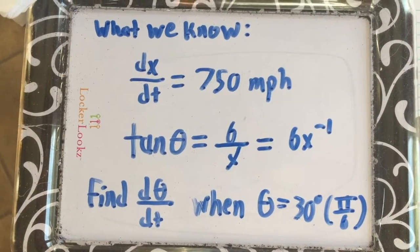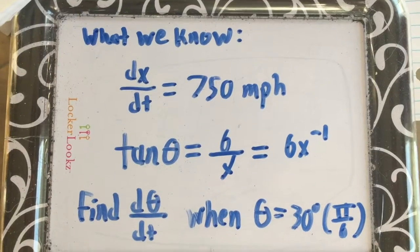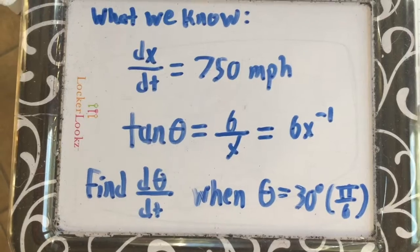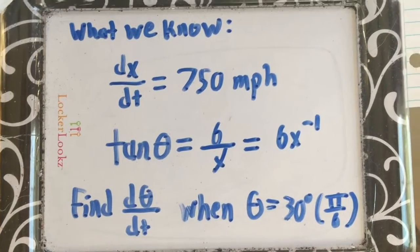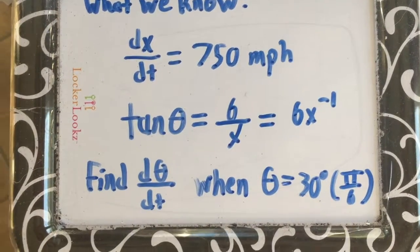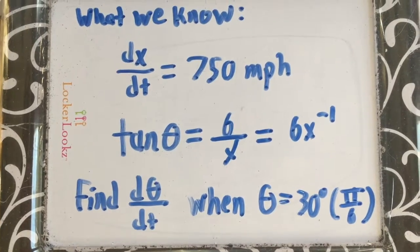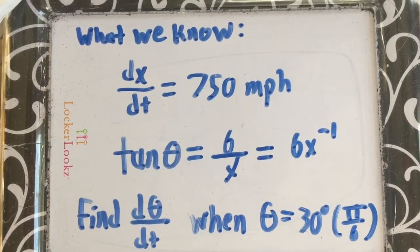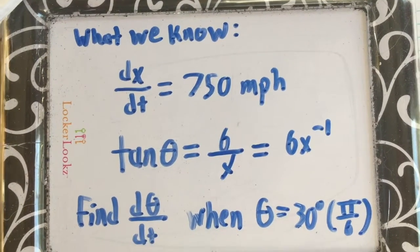dx/dt equals 750 miles per hour. Our equation is tan theta equals 6 over x or 6x to the negative first power. We will find d theta dt when theta equals 30 degrees or pi over 6.